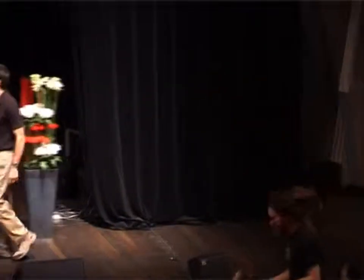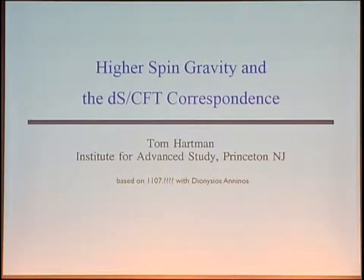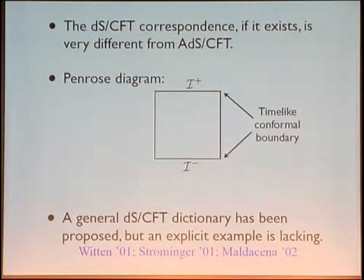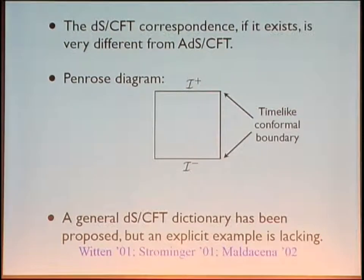Our next speaker is Tom Hartman from the Institute for Advanced Study at Princeton, with a talk on 'Higher Spin Gravity and the dS-CFT Correspondence.' I will tell you about a paper with Dionysius Anninos on quantum gravity in de Sitter space. The main result is to conjecture an explicit microscopic realization of the dS-CFT correspondence. dS-CFT is very different from AdS-CFT because the conformal boundary in de Sitter space is time-like, leading to strange requirements for the dual CFT. Nonetheless, proposals from ten years ago built a general dictionary for how dS-CFT should work using the analogy of AdS-CFT, but explicit examples were not constructed.